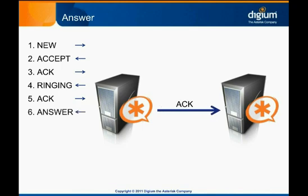After this message is acknowledged, the two endpoints should be able to start transmitting media to each other. Note that this acceptance is different than the ACK message earlier in the call flow. The message called ACK is automatically sent by the EECS channel driver when it receives a valid NEW request. The ANSWER message is sent when a human or dial plan indicates that media should be passed between the two endpoints.